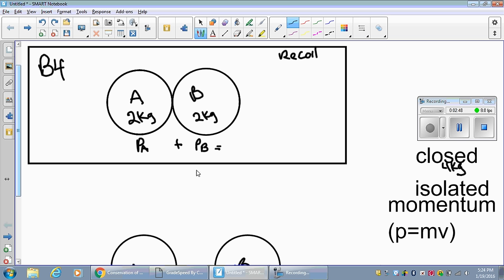Whatever this adds up to has to be the same as my after shot. So this is my before collision. This is after. So this expands. P is equal to MV. So my mass times velocity plus my mass times velocity.